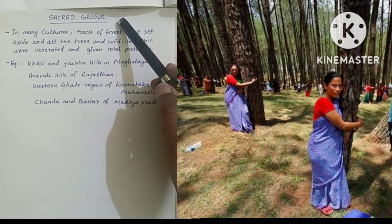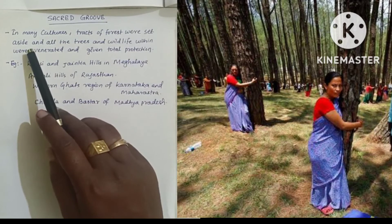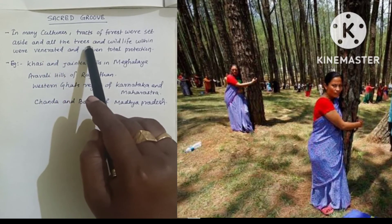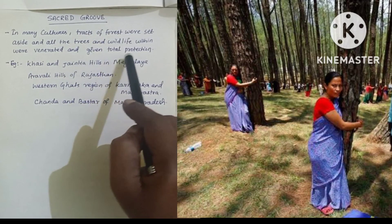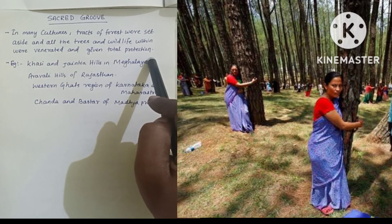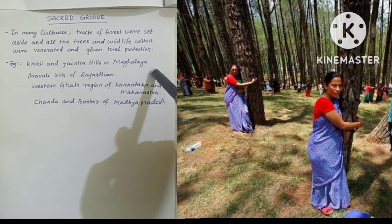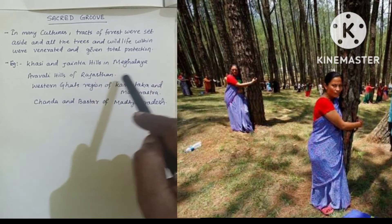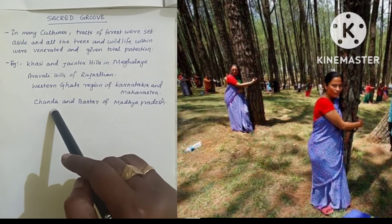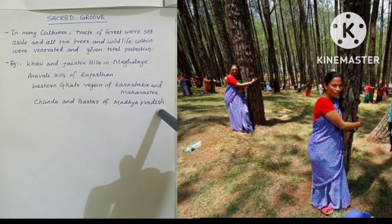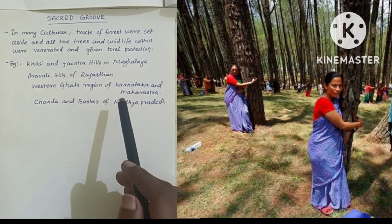Sacred groves are tracts of forests set aside in many cultures where all trees and wildlife within are given total protection. Examples include the Khasi and Jaintia hills in Meghalaya, the Aravalli hills of Rajasthan, the Western Ghats region of Karnataka and Maharashtra, and Chanda and Bastar of Madhya Pradesh. This concludes the topic of in-situ conservation.